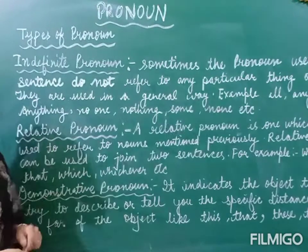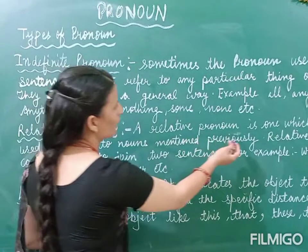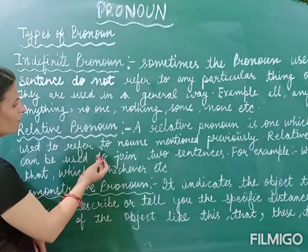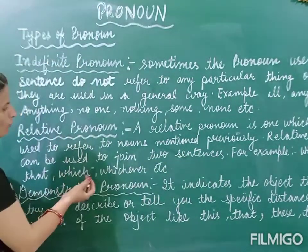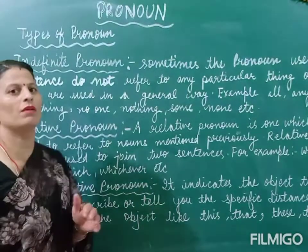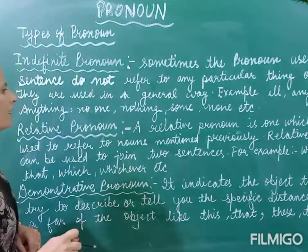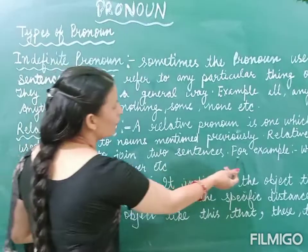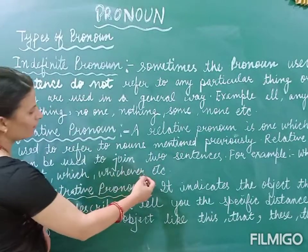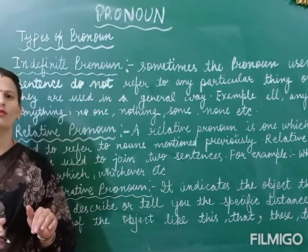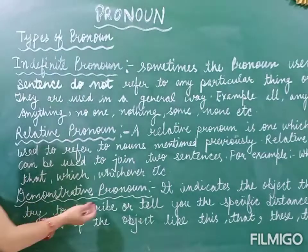Moving on to the second type: relative pronoun. The word 'relative' means relation. A relative pronoun is one which is used to refer to two nouns mentioned previously. Relative pronouns can be used to join two sentences. Examples of relative pronouns include: who, whom, that, which, whichever. These are the words that join two sentences, and that is called a relative pronoun.